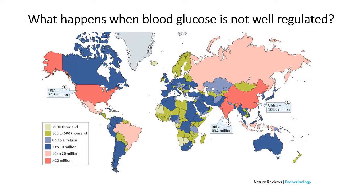What would happen if we don't regulate glucose? Diabetes would be the issue for the most part. This graph shows the distribution of diabetes across the world and where it is most prevalent. In some countries, mostly in Africa, numbers tend to be quite low, but looking towards North America, Russia, and parts of Asia, the occurrence of diabetes is quite high. This can be due to either a genetic condition or to lifestyle factors, and we'll look at those two on the next slide.